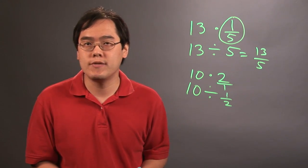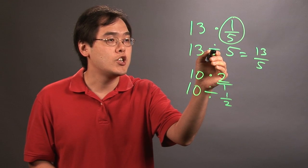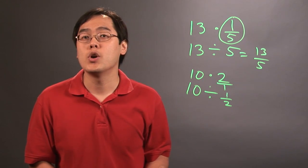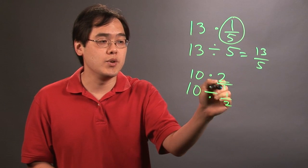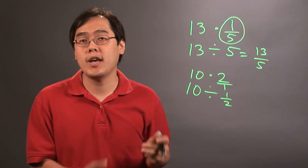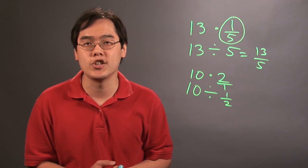So when you're changing from multiplication to division, you are changing the operation, and you're also rewriting the number into its reciprocal. So I'm Jimmy Chang, and this is a couple of illustrations on how to change from multiplication to division.